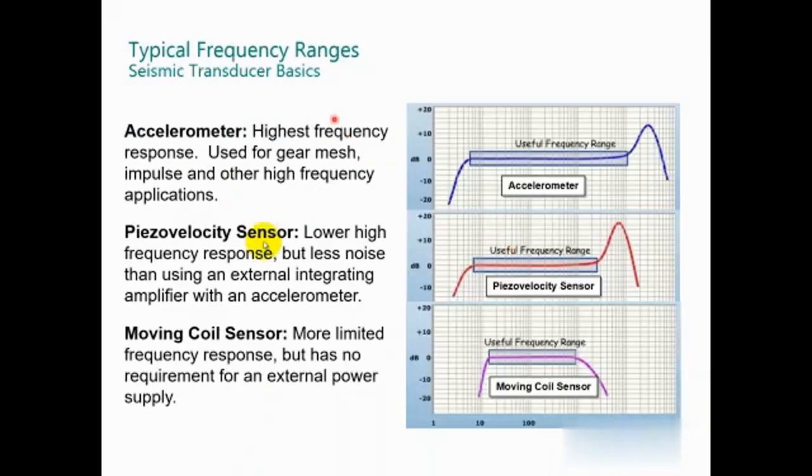From the aspect of frequency, the accelerometer has the highest frequency of up to 20 kHz and the minimum is around 10 Hz. The piezoelectric velocity has a lower high-frequency range, around 5000 Hz with minimum of 10 Hz. For the moving coil, it's more limited - the frequency is until 1000 Hz, and the starting depends on the design from 10 Hz or even lower frequency.